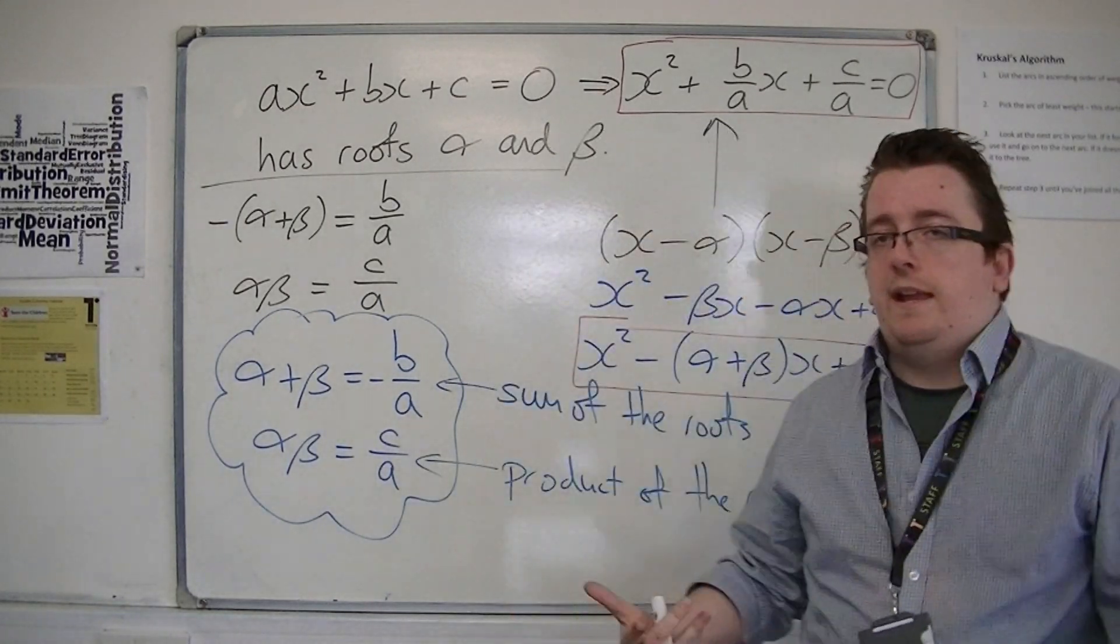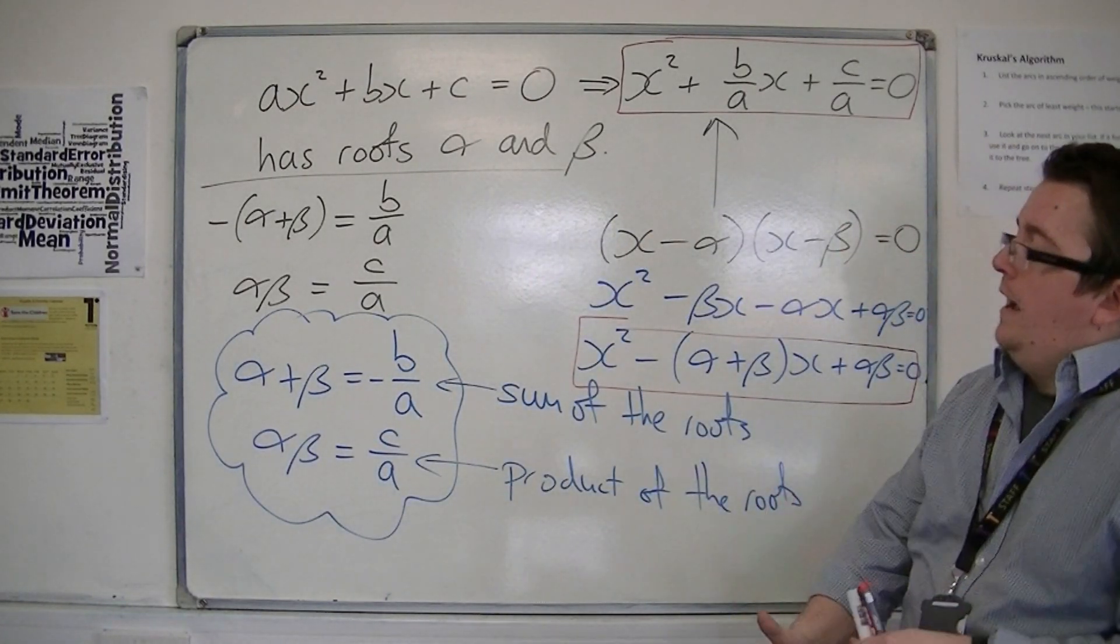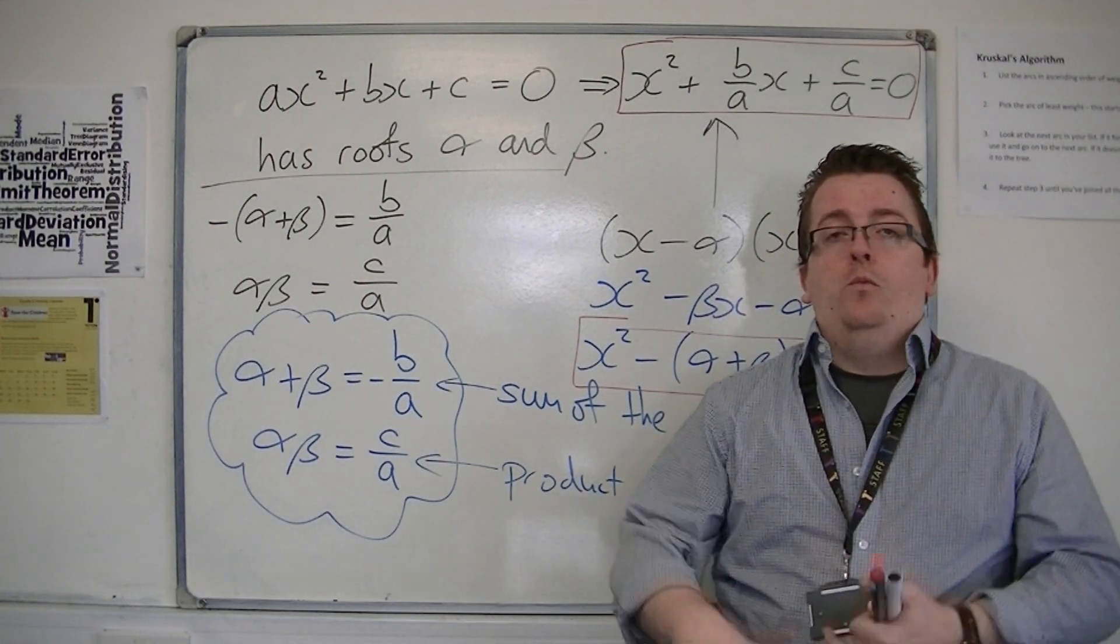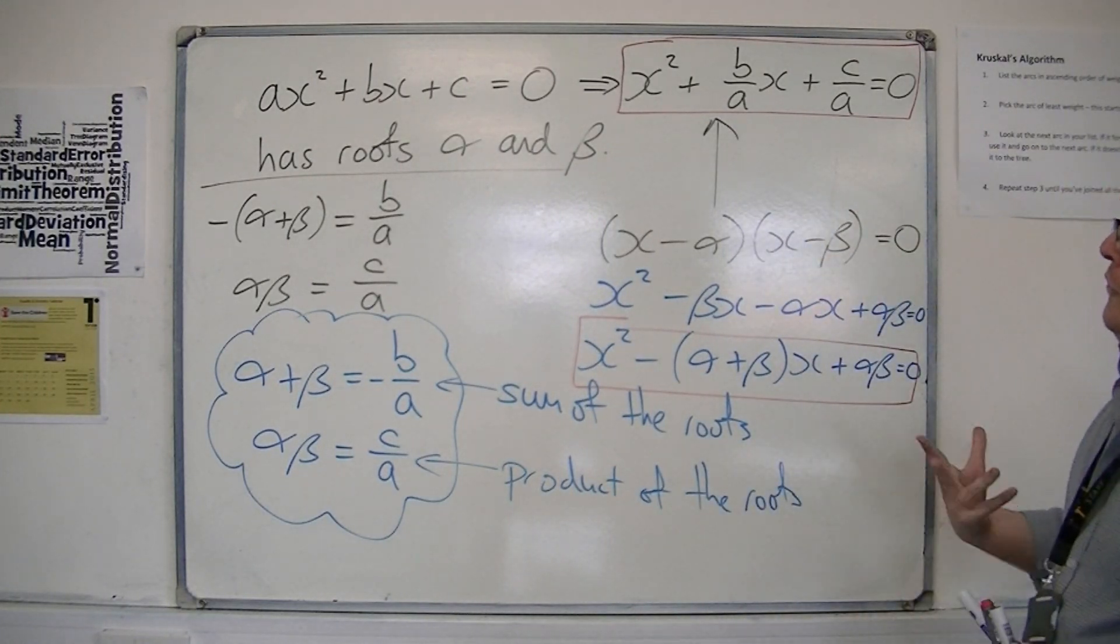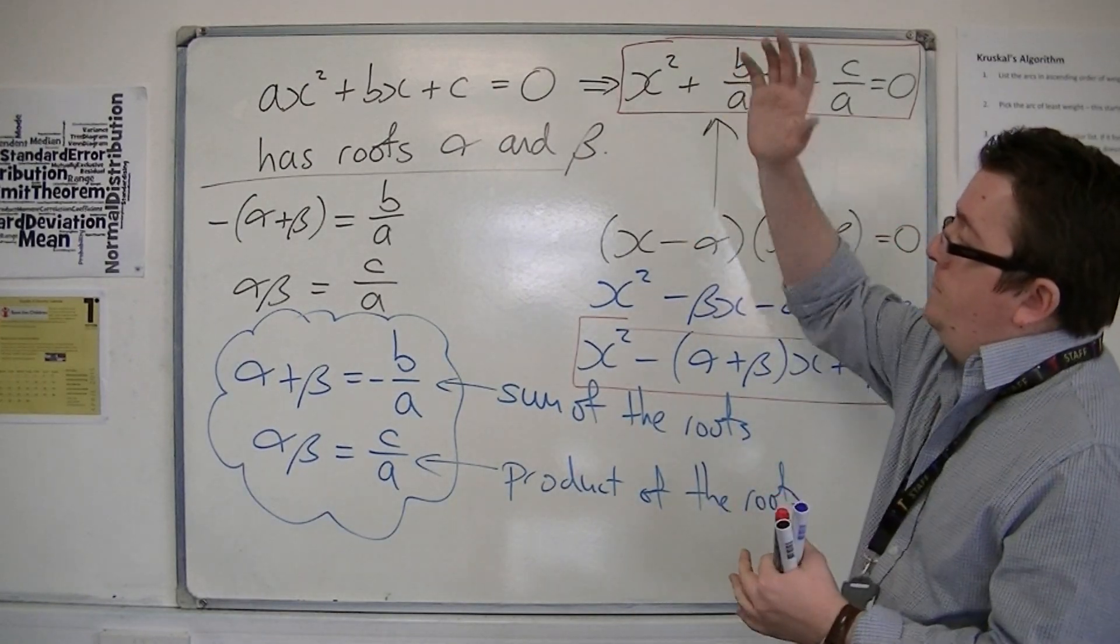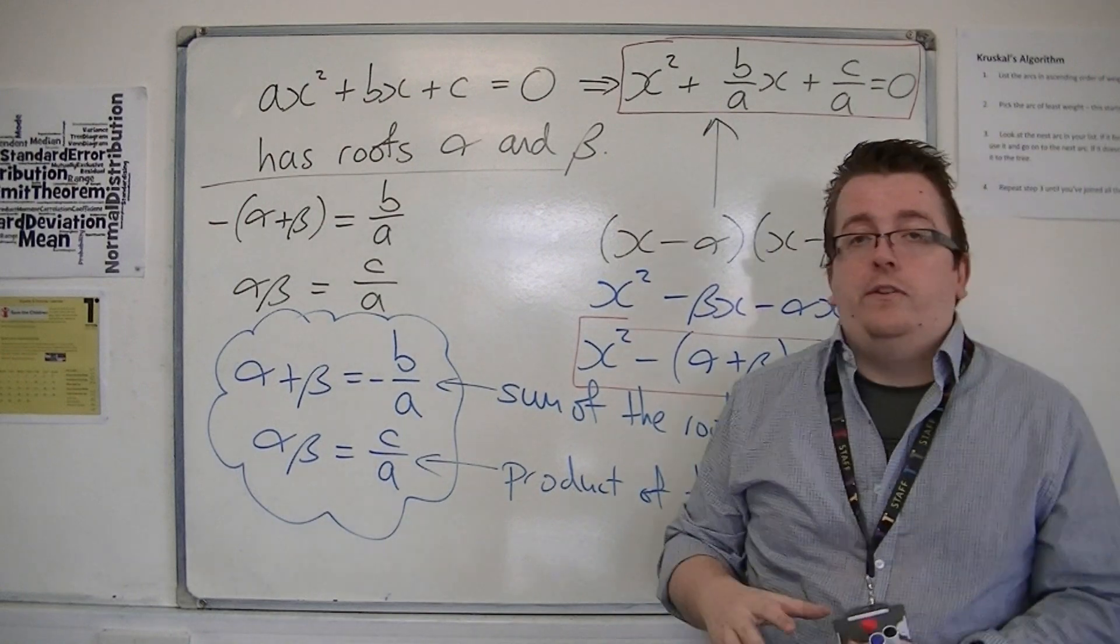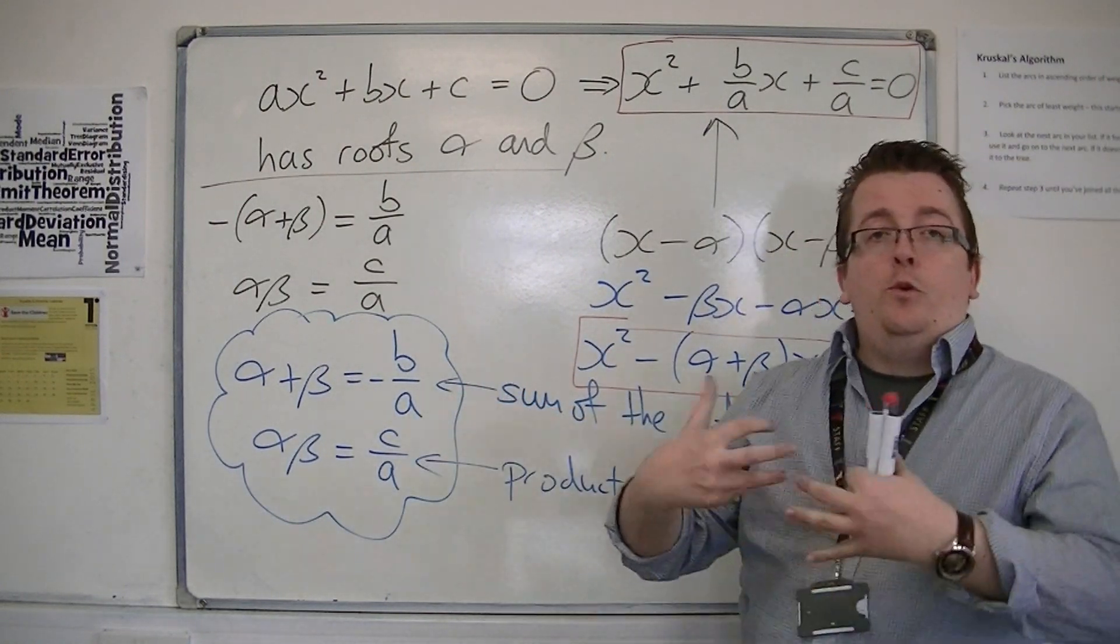So, what we're going to be looking at in this chapter is considering what we can do, manipulations with α and β. So, we might want to find a quadratic whose roots are a mixture of alphas and betas, and we could use these results in order to find them.